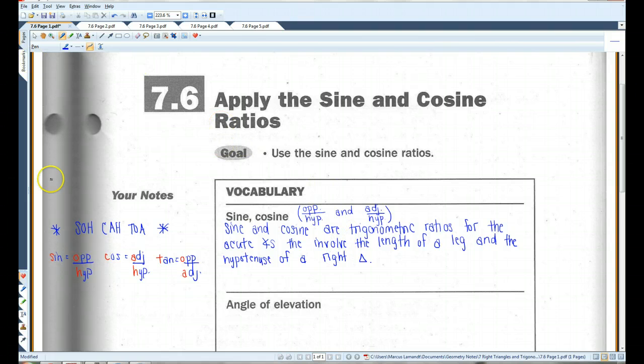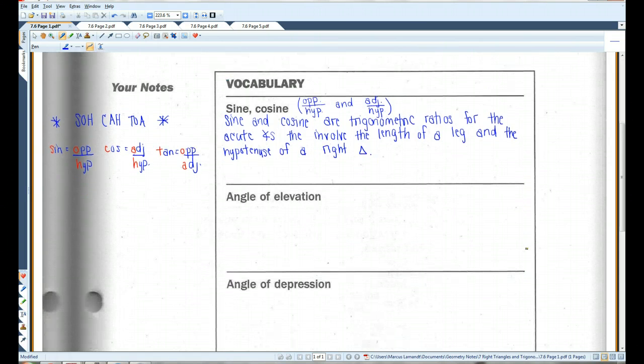I will probably mention this in class if I haven't done so already. Basically, SOHCAHTOA is a really good way of memorizing all three trig functions. Sine is opposite over hypotenuse, COH, cosine is adjacent over hypotenuse, and TOA, tangent is opposite over adjacent. So if you can memorize just this word, you have all three trig functions memorized.